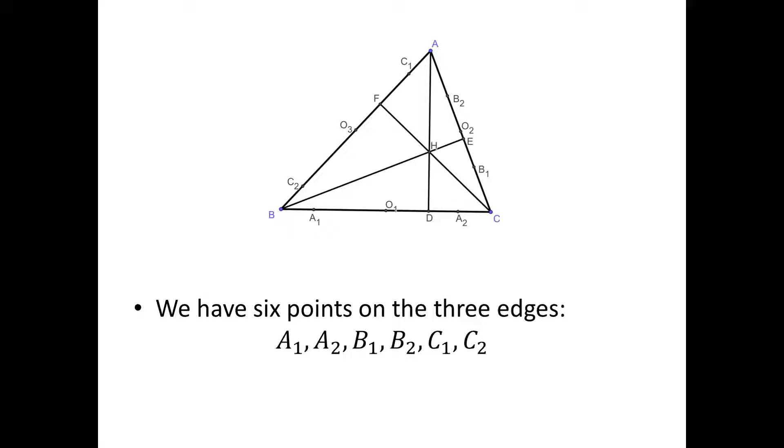So far, we created six points on three edges: A1, A2, B1, B2, C1, and C2. Our goal is to prove that all these six points lie on a circle.